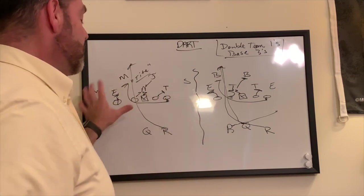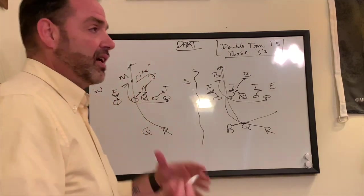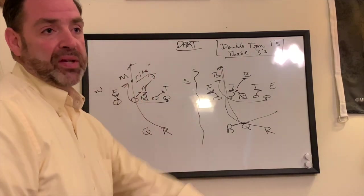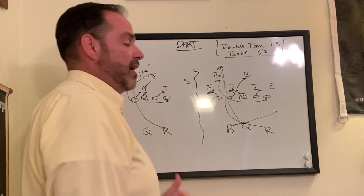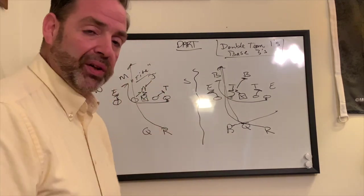Now the overhang players, the way that you deal with those guys is basically with your RPO scheme, whether it be a pass or slant in there or something of that nature or just a bubble screen or something like that.